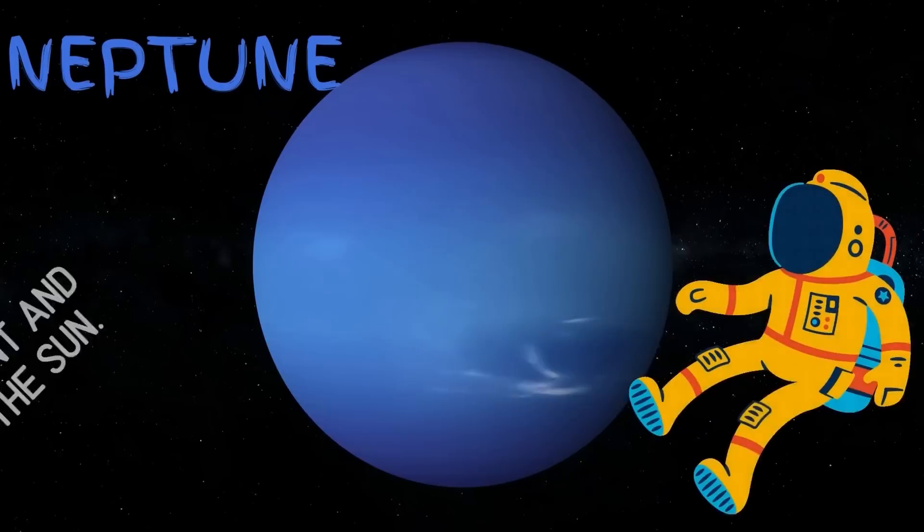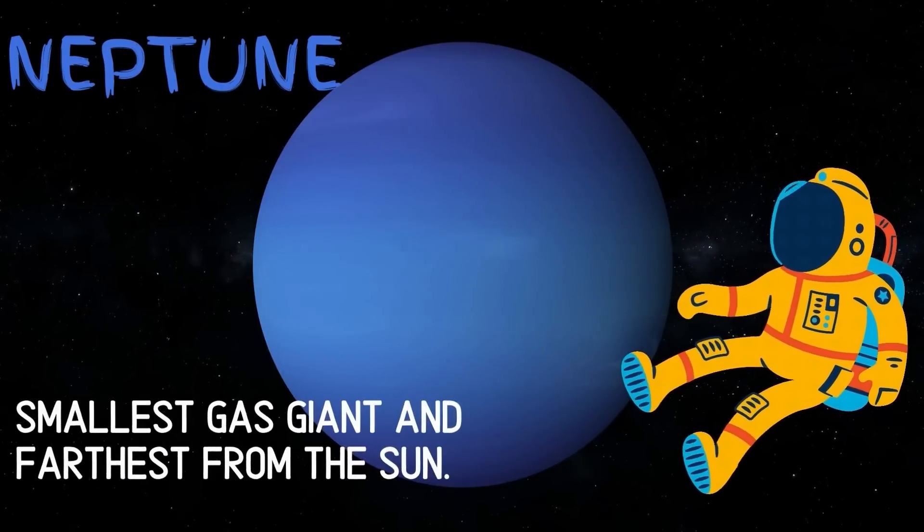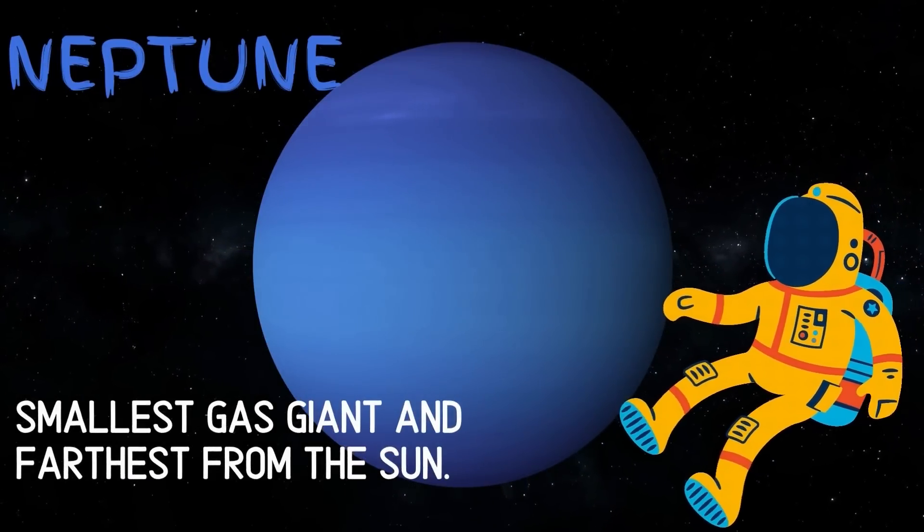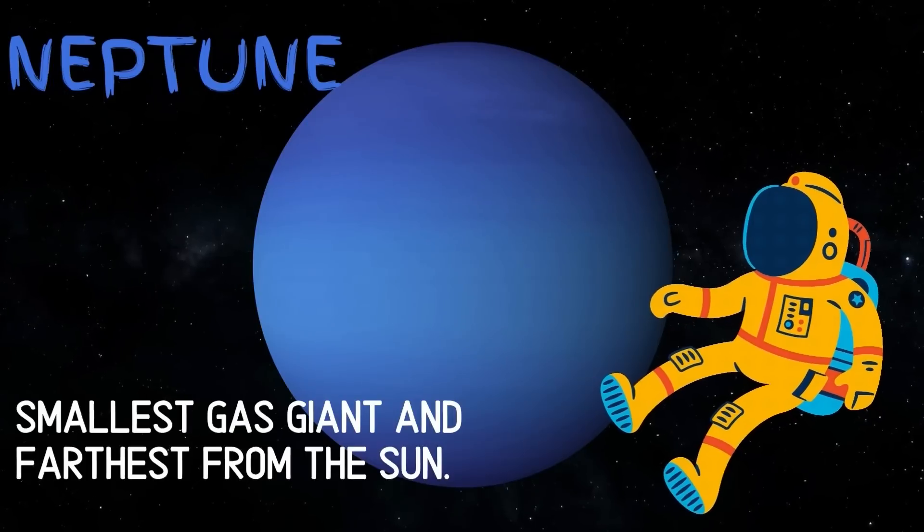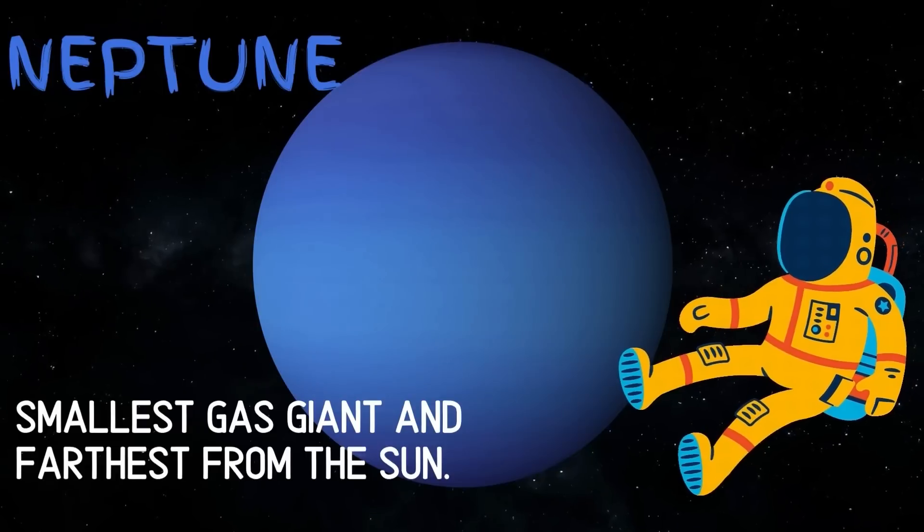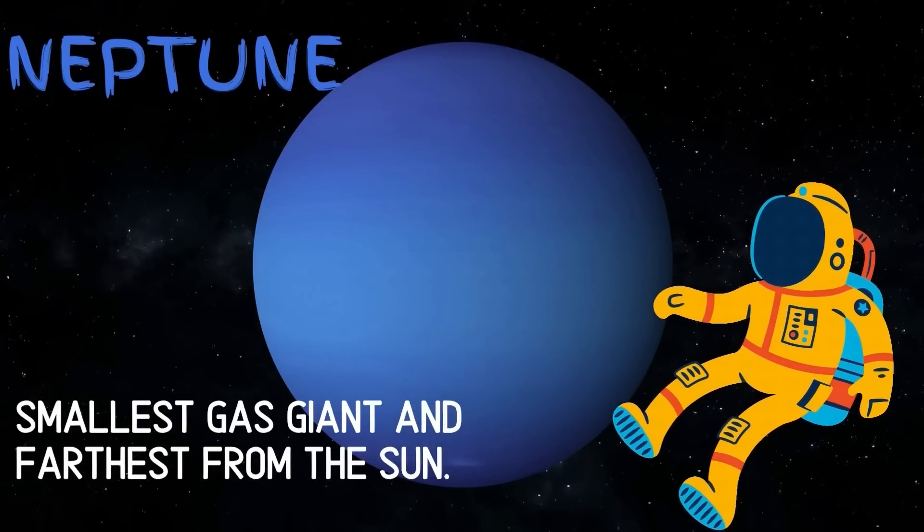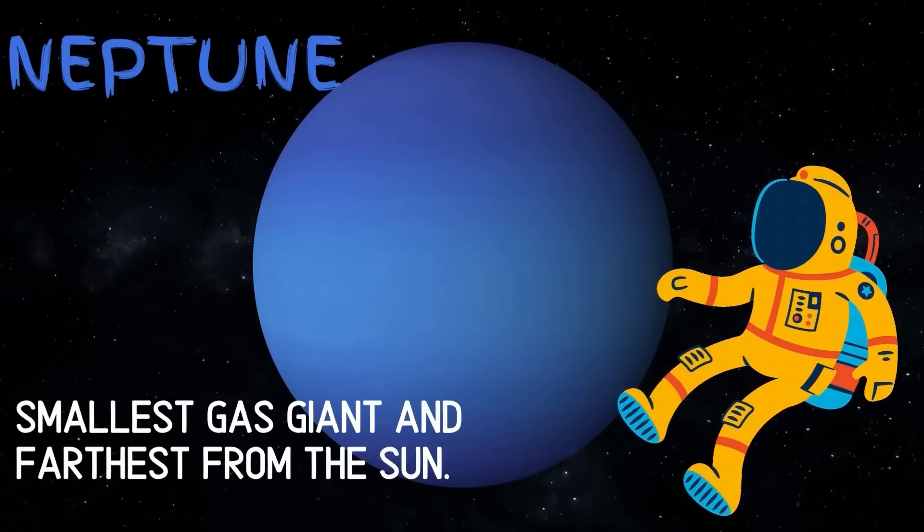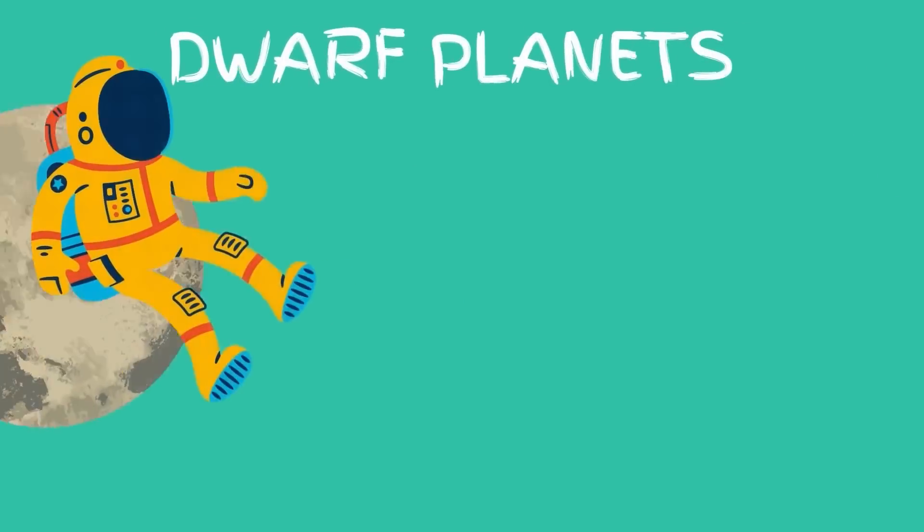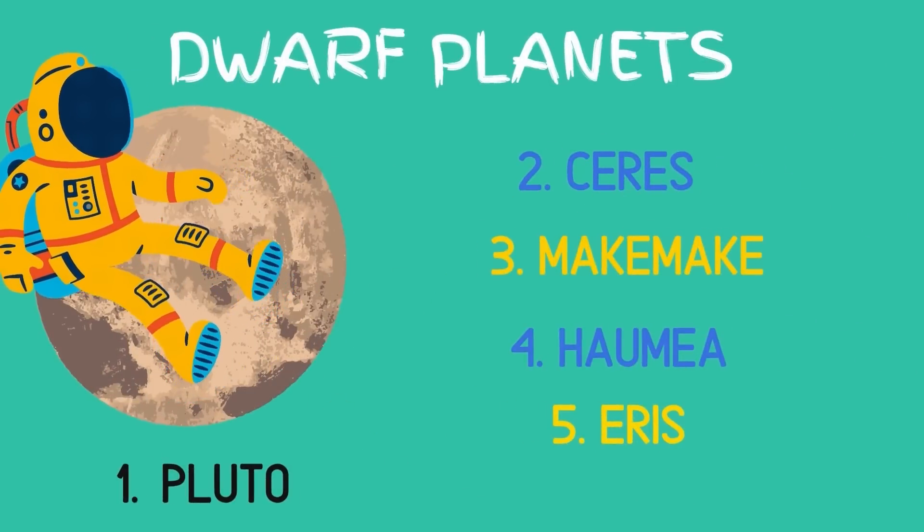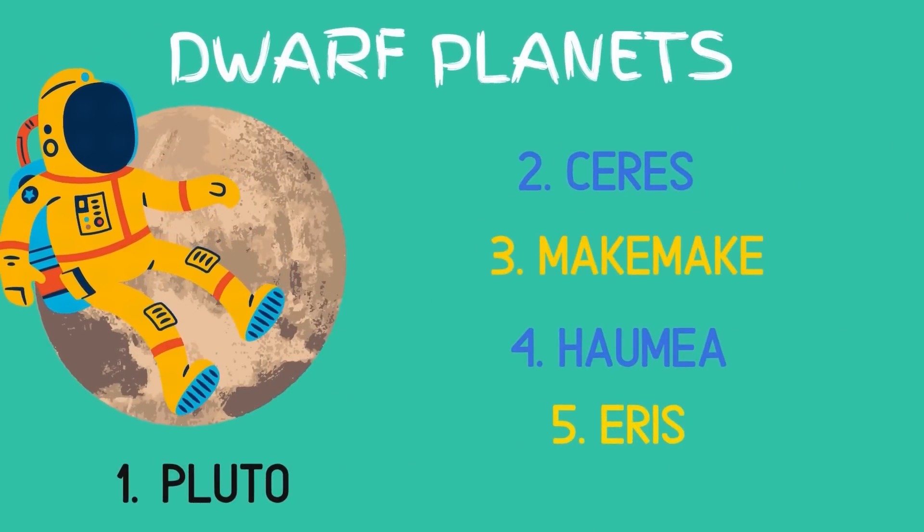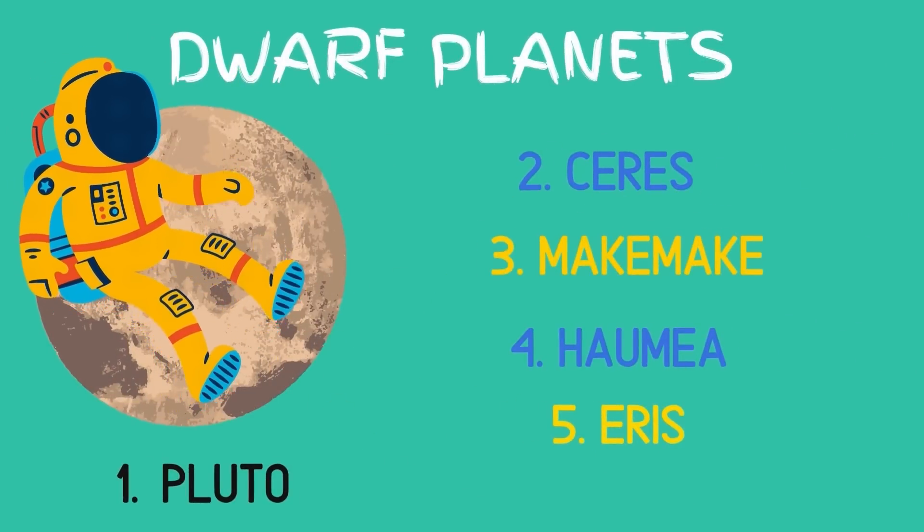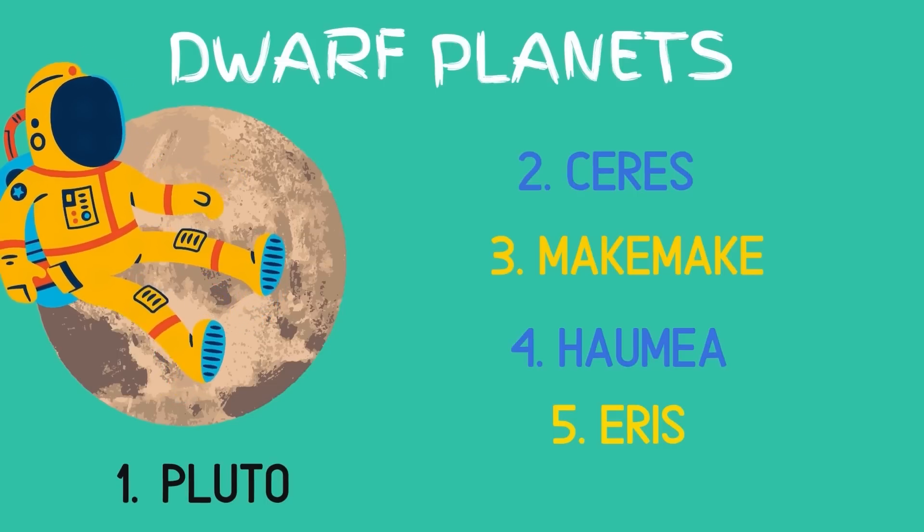Neptune is the eighth planet from the sun and the farthest planet in the solar system. Neptune is a gas giant and a cold and dark planet. There are five dwarf planets in our solar system: Pluto, Ceres, Makemake, Haumea, and Eris.